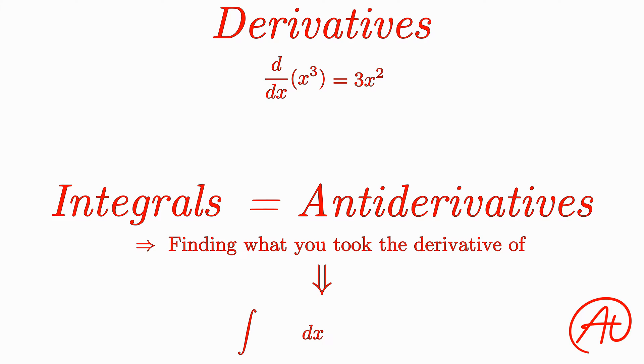So if we want to work backwards and find the integral of our derivative up top, we can write it like this, which is read as the integral of 3x squared dx.